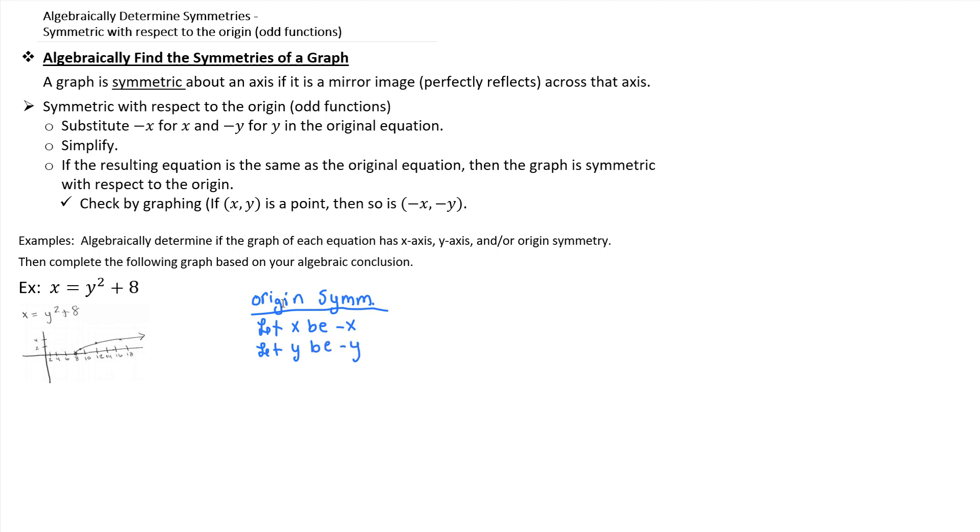And again, you're looking for, after you do this replacement, do you get the original x = y² + 8 back? So let's go ahead and rewrite. Instead of writing the x, let's put in the negative x. Instead of writing y², let's put in the negative y for the y. So it becomes (-y)² plus 8. And then we want to simplify. So we get -x = (-y)² would become a positive y² because a negative times a negative is positive, plus 8.